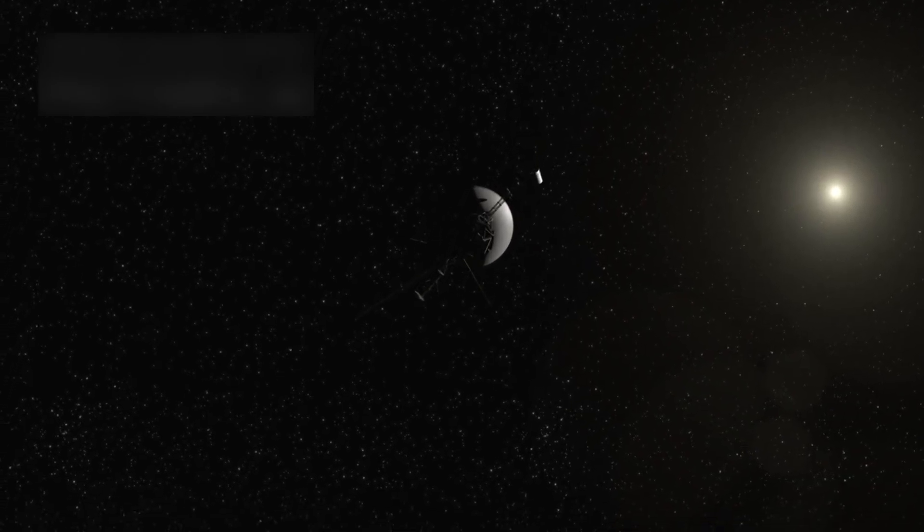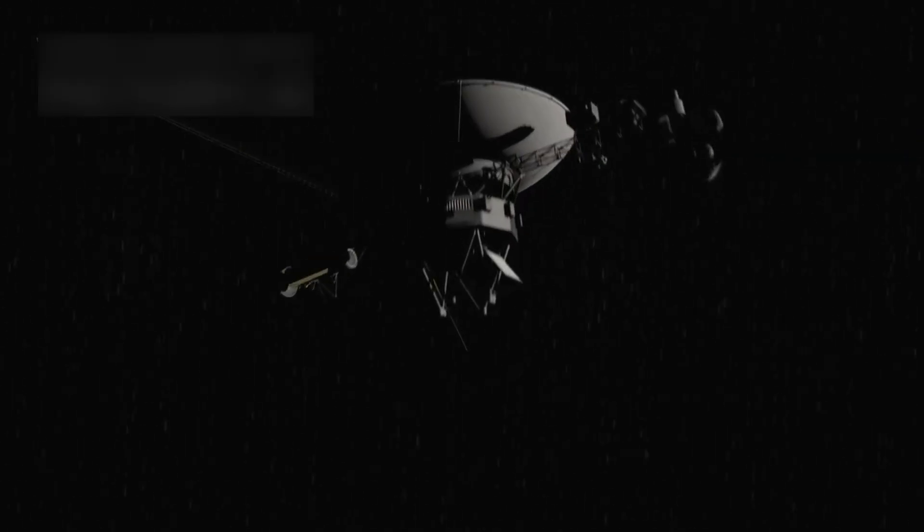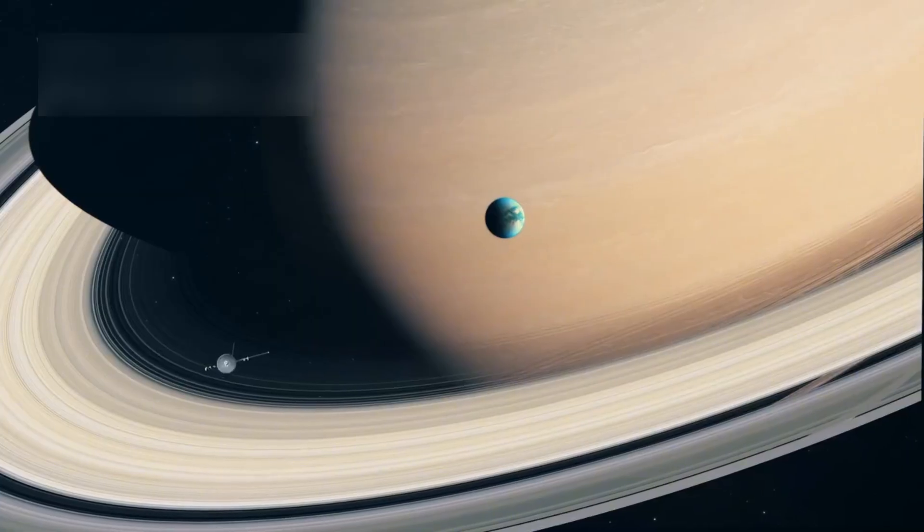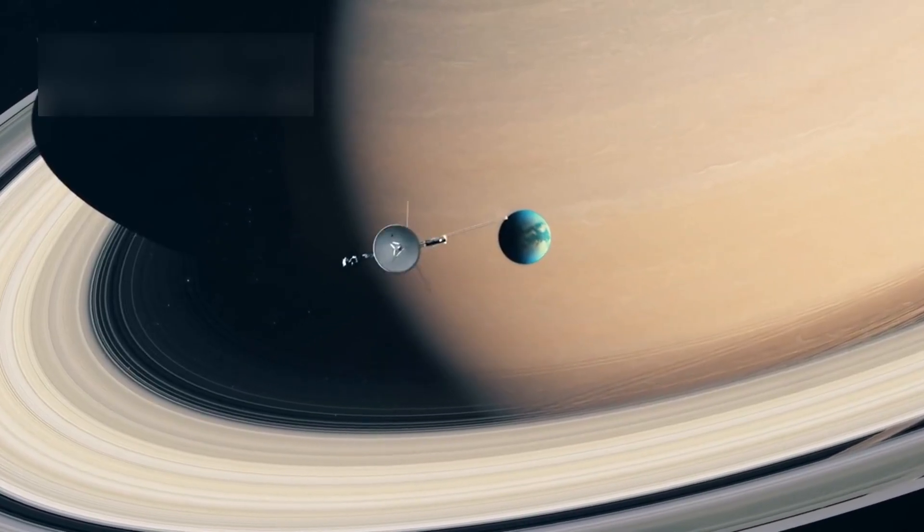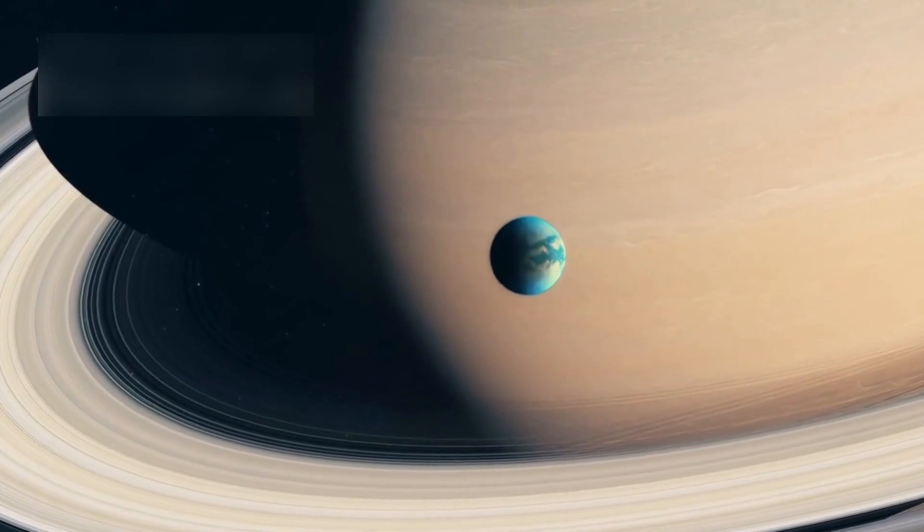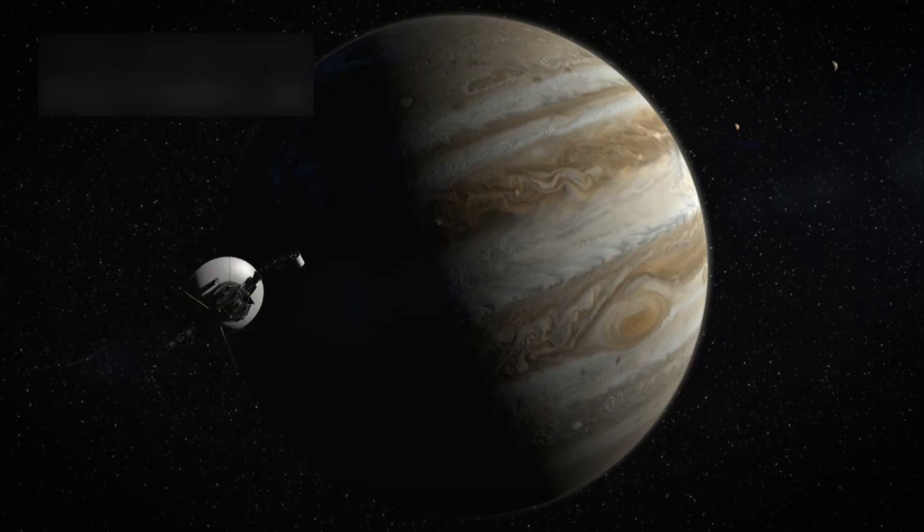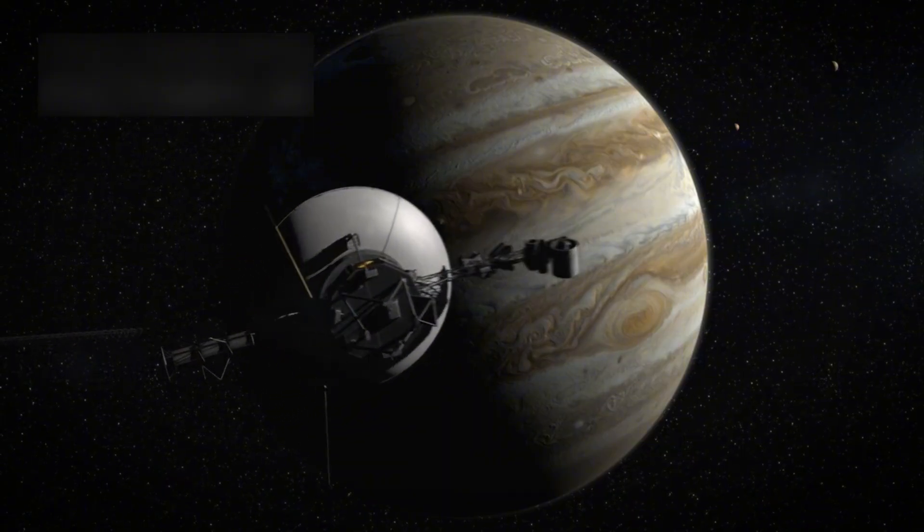On September 5, 1977, NASA launched Voyager 1, beginning one of the most daring space missions in human history. The spacecraft, along with its twin Voyager 2, was designed to explore Jupiter and Saturn, two of the gas giants that dominate our solar system. The mission was meant to last just five years, but what happened next amazed even the most optimistic scientists.